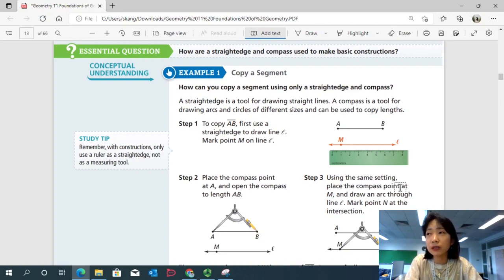You need a straightedge and a compass. Of course, you can measure with your ruler the exact length and copy a segment. But if you have to use a compass, these are the correct steps. Okay. So with constructions, you only use a ruler as a straightedge, not as a measuring tool. So if you see the word construct, you will not measure with your ruler. You only use it as a straightedge.